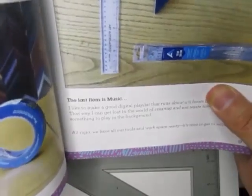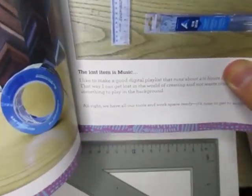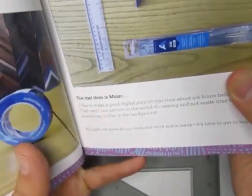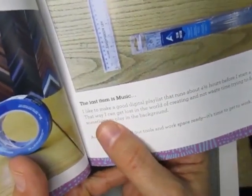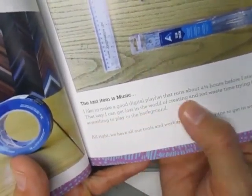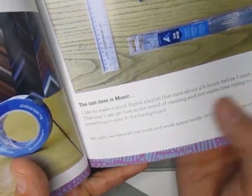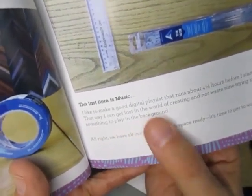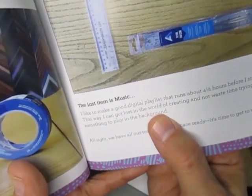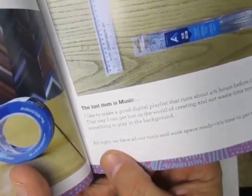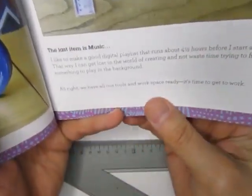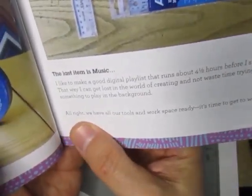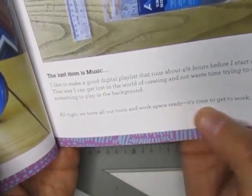Let's see here, that's just the last item here. It says music - I like to make a good digital playlist that runs about four and a half hours before I start a project, that way I can get lost in the world of creating and not waste time trying to find something to play in the background. That's an interesting idea, make a playlist. So this is a very modern book here that incorporates the digital world. Let's see, all right, we have our tools and our workspace ready, it's time to get to work.